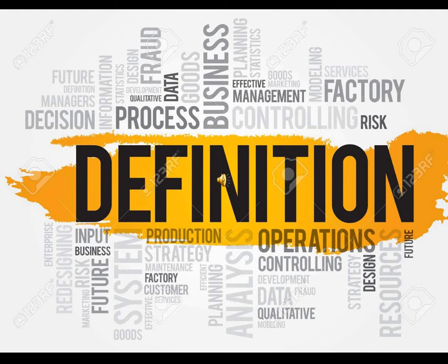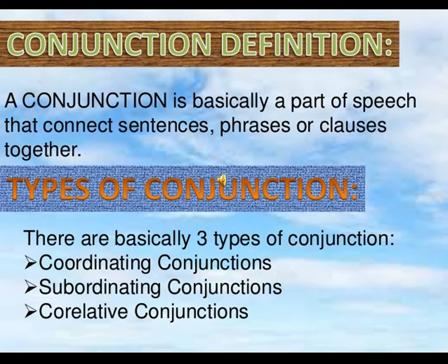Before we start any discussion, it's very important to first have a look at the definition of conjunctions. A conjunction can be defined as a part of speech that connects sentences, phrases, or clauses together. So conjunctions are basically connectors — words that can connect not just sentences, but also phrases and clauses, bringing different types of sentences and phrases together.